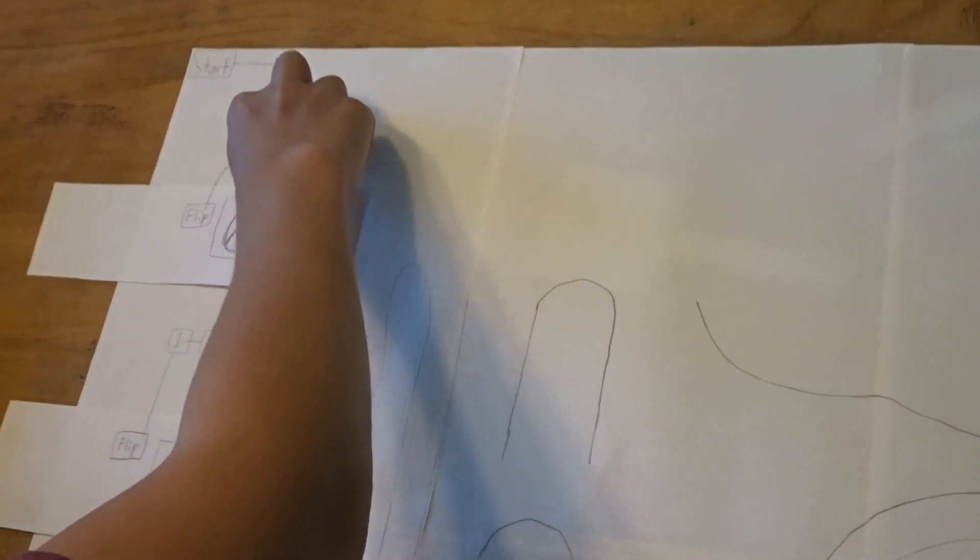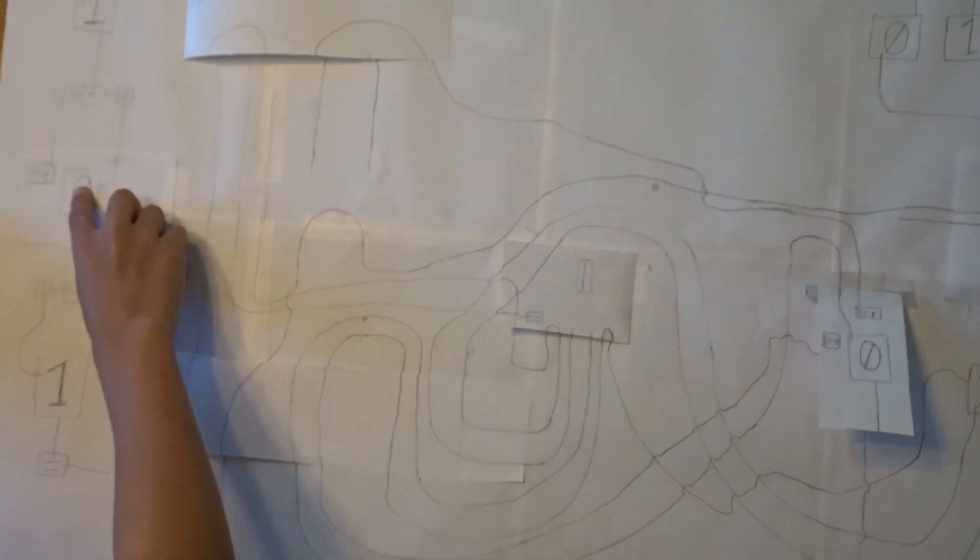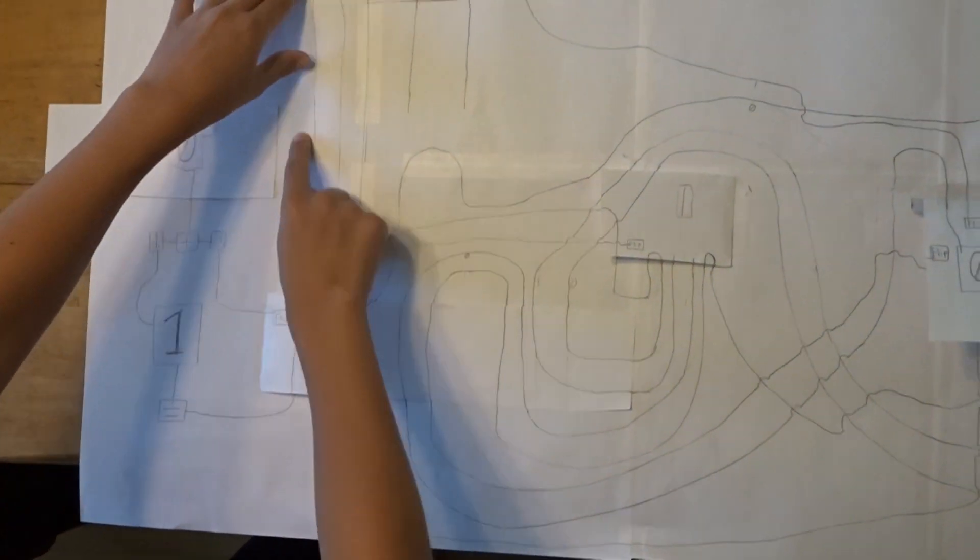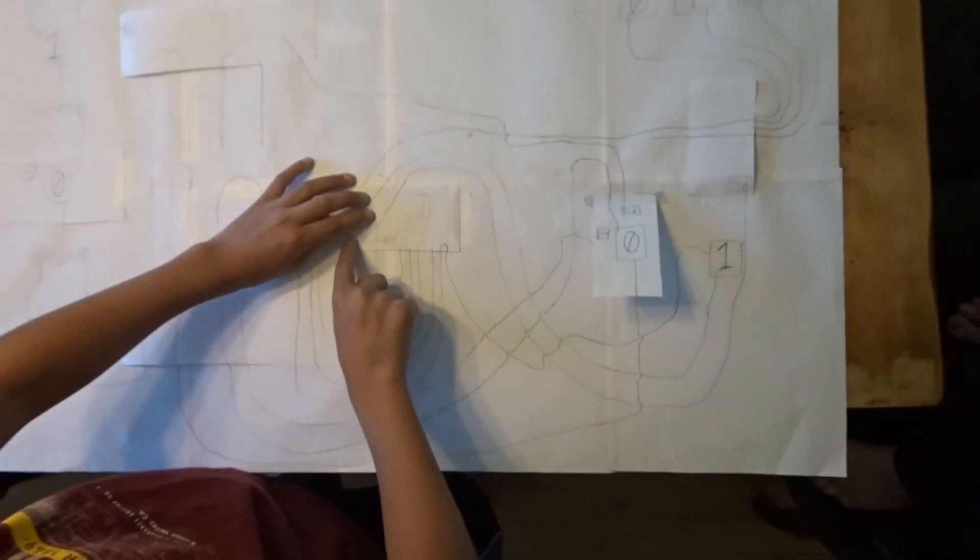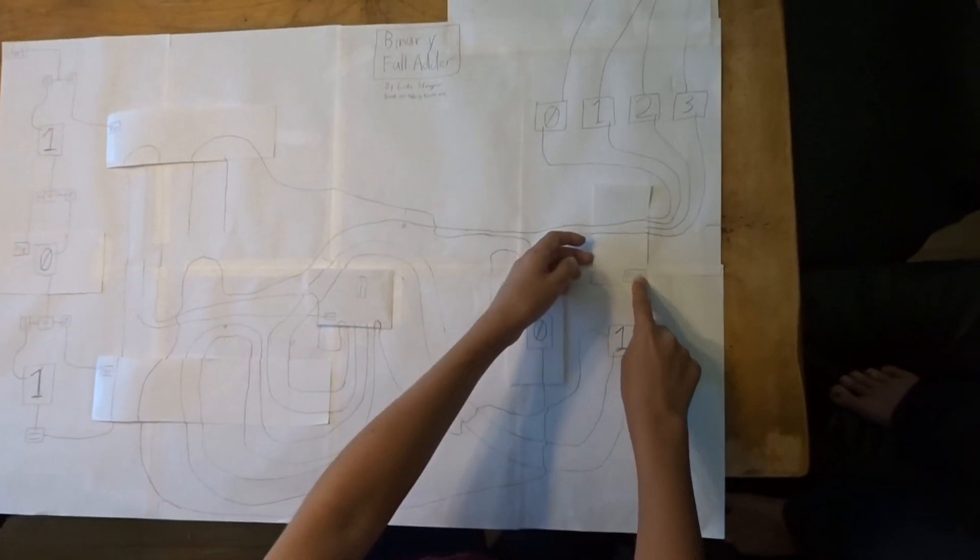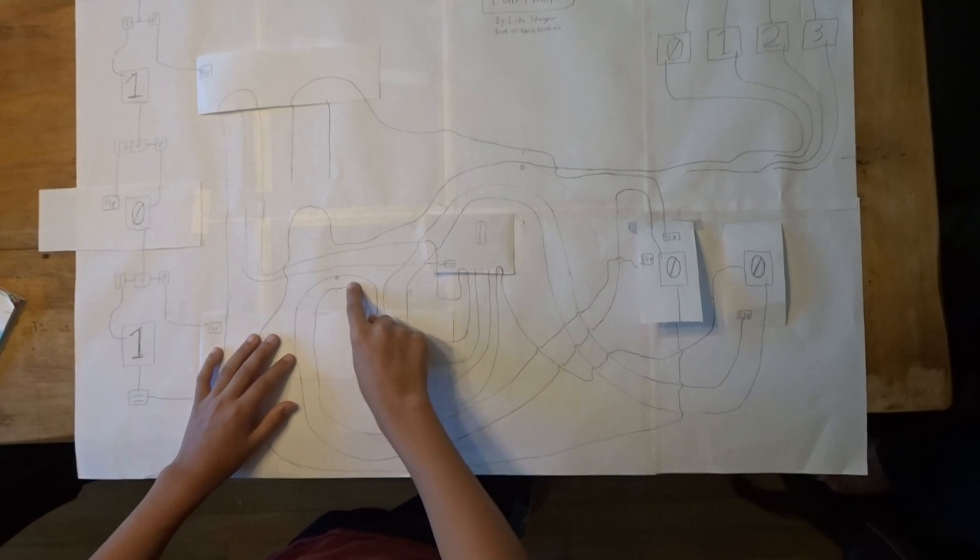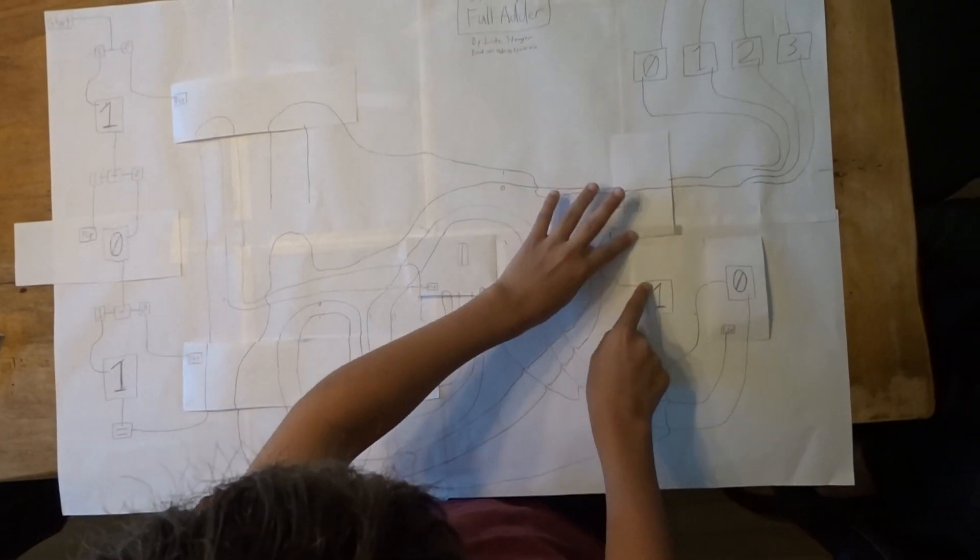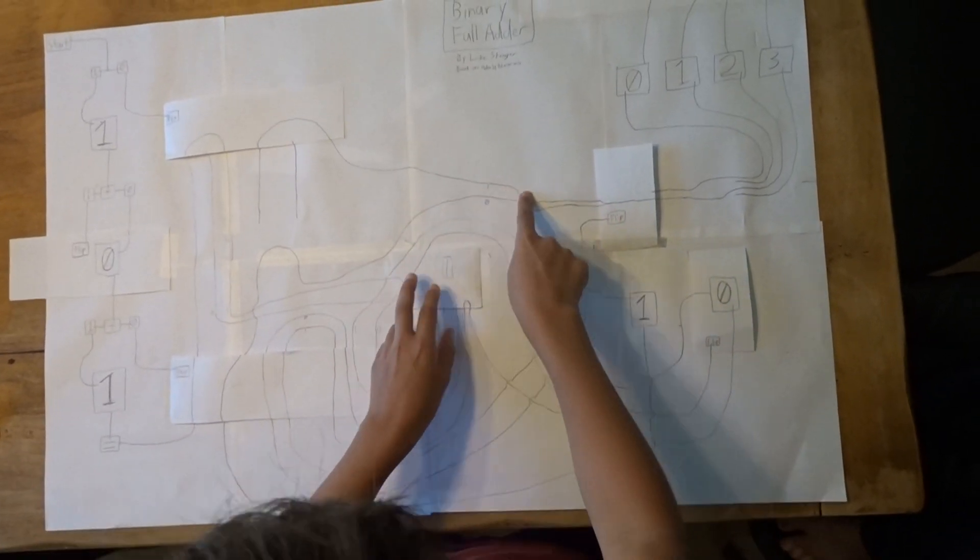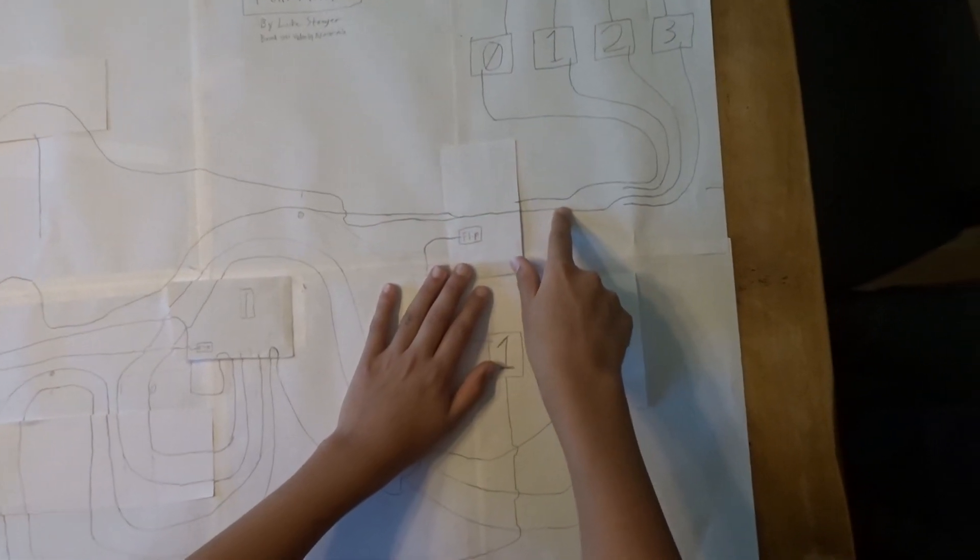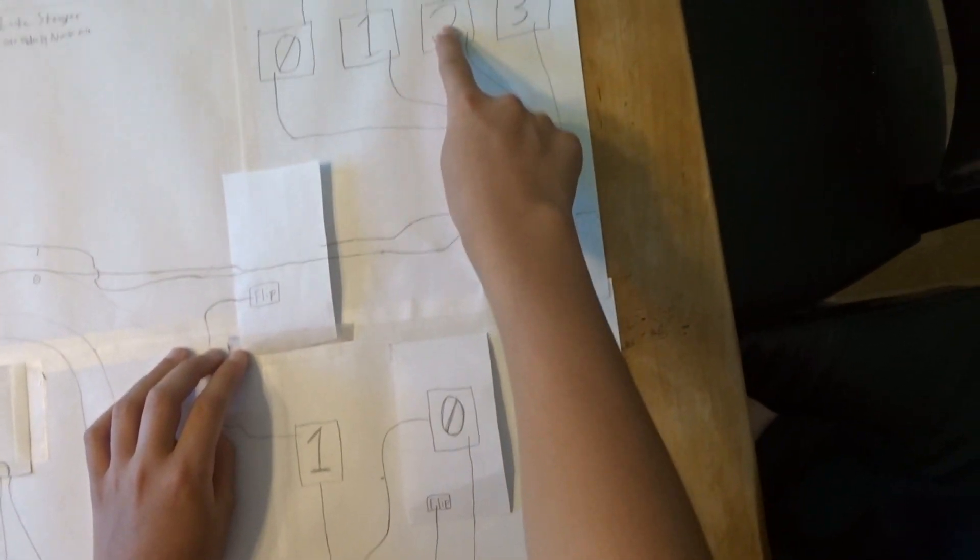I'll add 1 plus 0 plus 1. Okay, so see it says one zero, which is two in binary again. It says two.